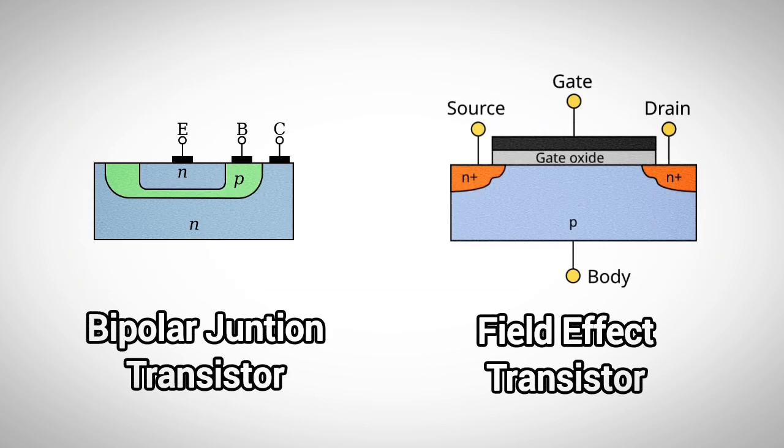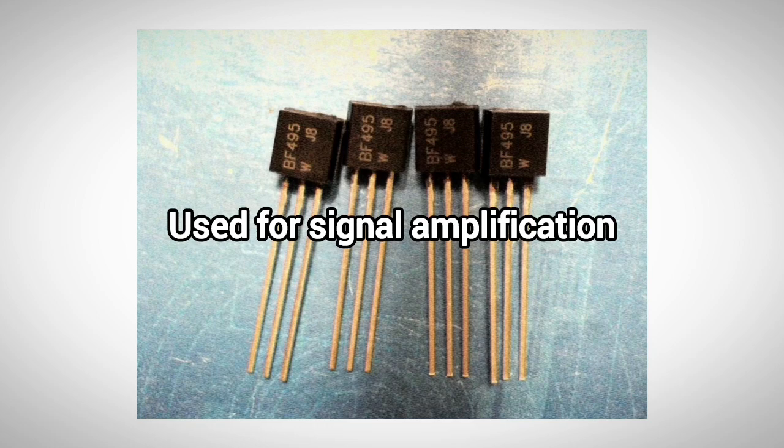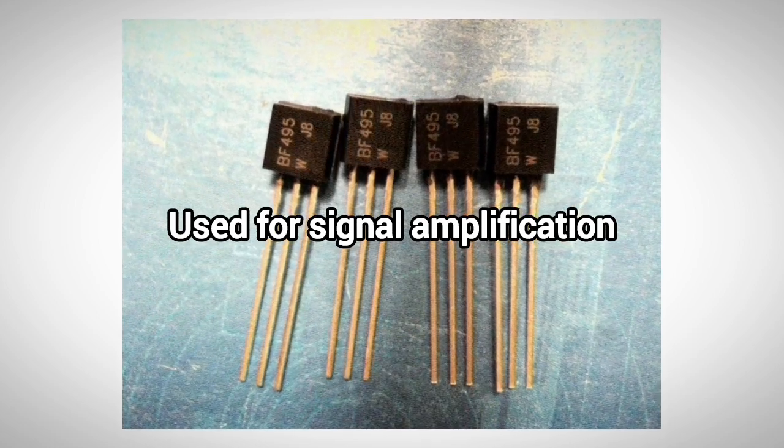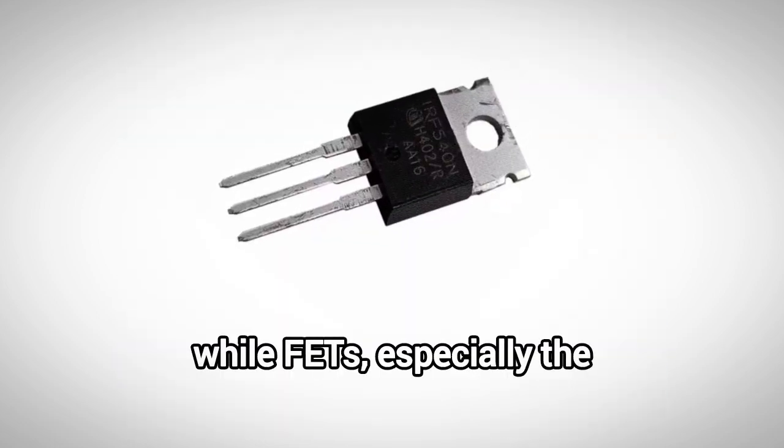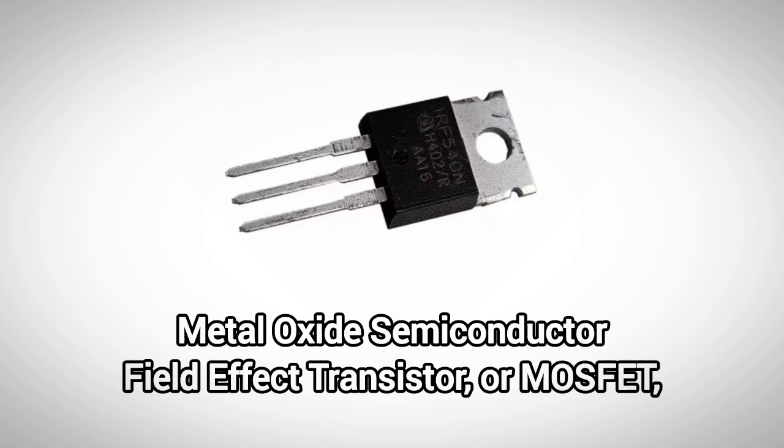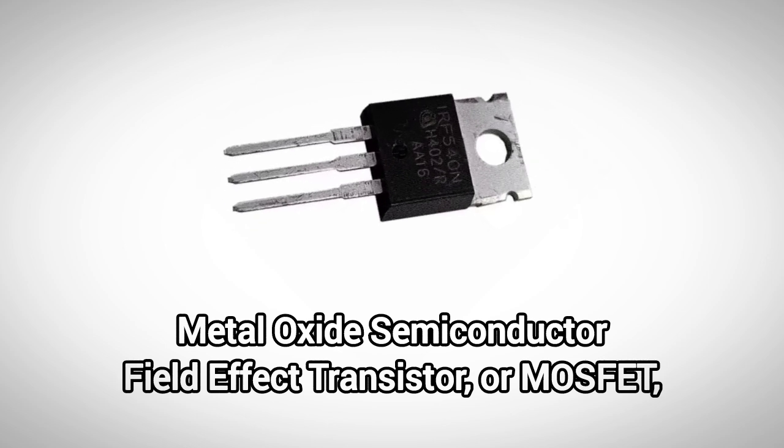There are two main types of transistors: the bipolar junction transistor, or BJT, and the field effect transistor, or FET. BJTs are great for signal amplification, while FETs, especially the metal oxide semiconductor field effect transistor, or MOSFET, are widely used for switching and power control in modern circuits.